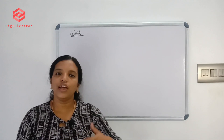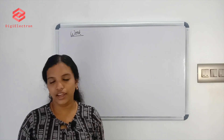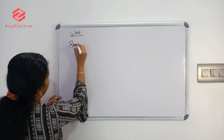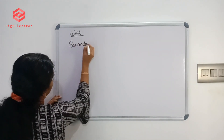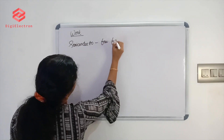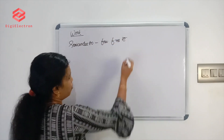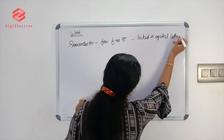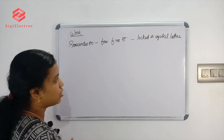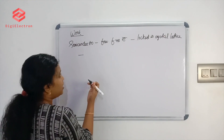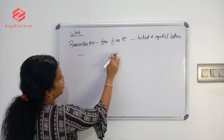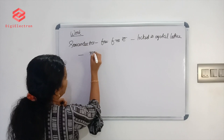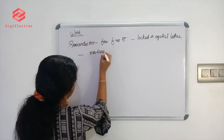In a semiconductor, resistance is high when few free electrons are available. In the absence of light, electrons are locked in the crystal lattice, so resistance is high.